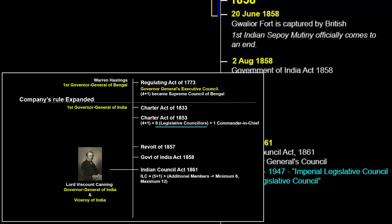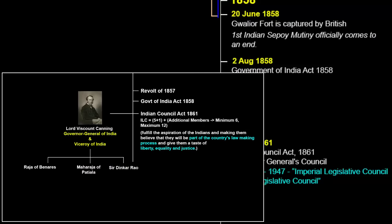The additional 6 to 12 non-official members invited after 1861 were called non-official members — but their opinions and decisions meant nothing; it was just for namesake. Lord Canning nominated 3 Indians to his Legislative Council: the Raja of Banaras, the Maharaja of Patiala, and Sir Dinkar Rao in 1862. The British appointed only those people who had friendly relations with the British Empire — in other words, those who did not participate in the revolt of 1857, mainly from princely states that were in good terms with the British.